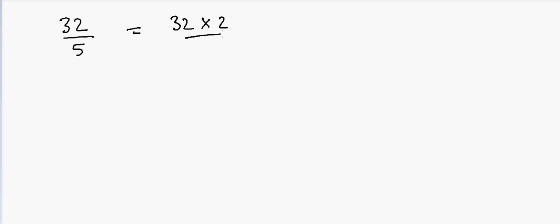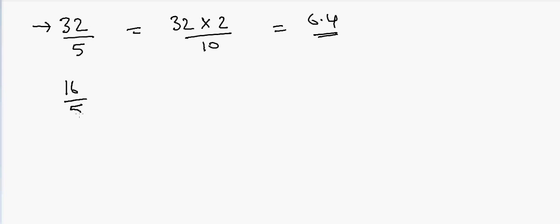So that will be equal to 64, and then put a decimal, so it's 6.4. All you have to do is take double the numerator and then place a decimal. Another example: suppose if I have 16 and I want to divide by 5. The answer is 2 times 16 is 32, and then put a decimal here — so that's your answer: 3.2.